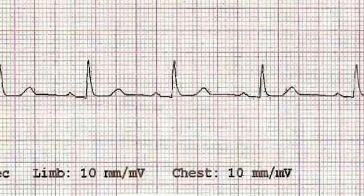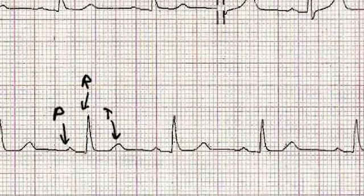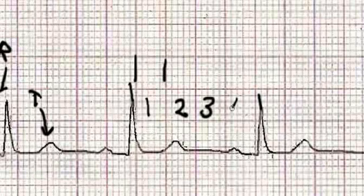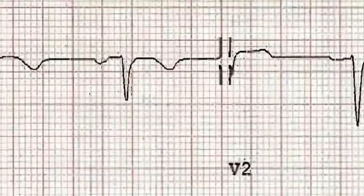Here we have an ECG which happens to be in sinus rhythm, and it shows a series of QRS complexes. Most ECG books tell you to calculate the rate by counting the number of big squares between two successive complexes — so from there to there. A big square is five millimeters. Counting here we get one, two, three, four big squares. Your average ECG book tells you to count the number of big squares and divide that number into 300.